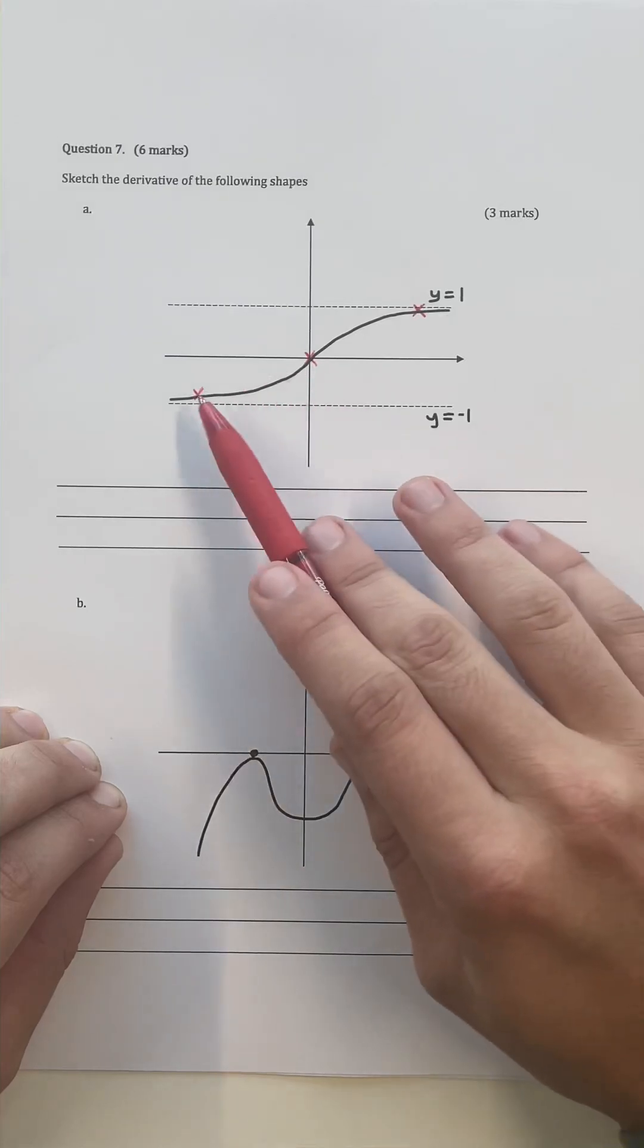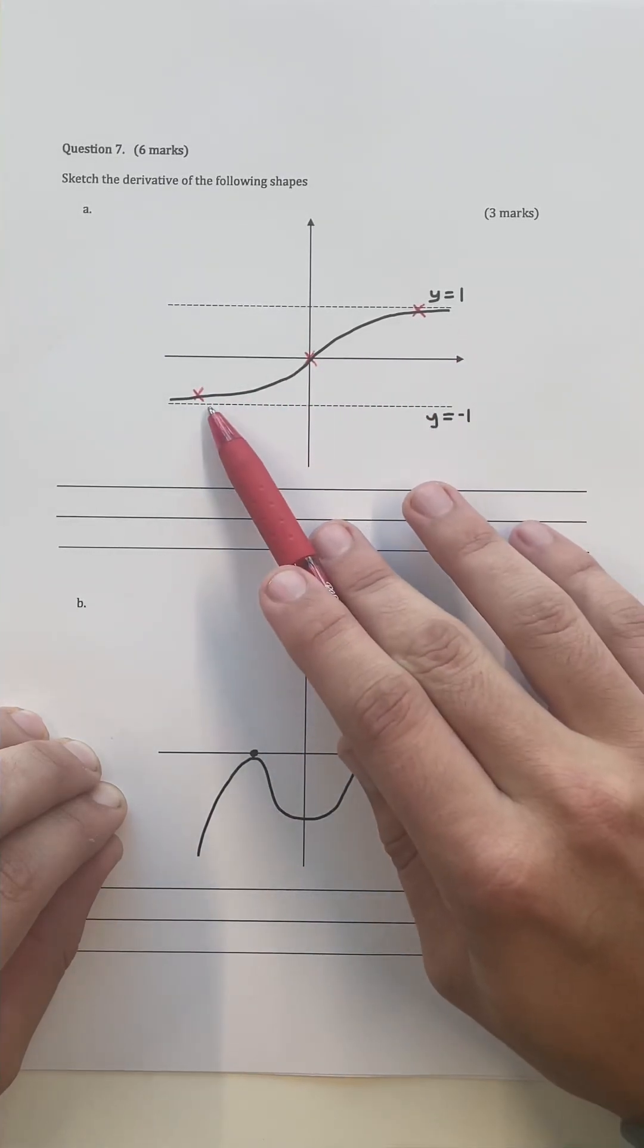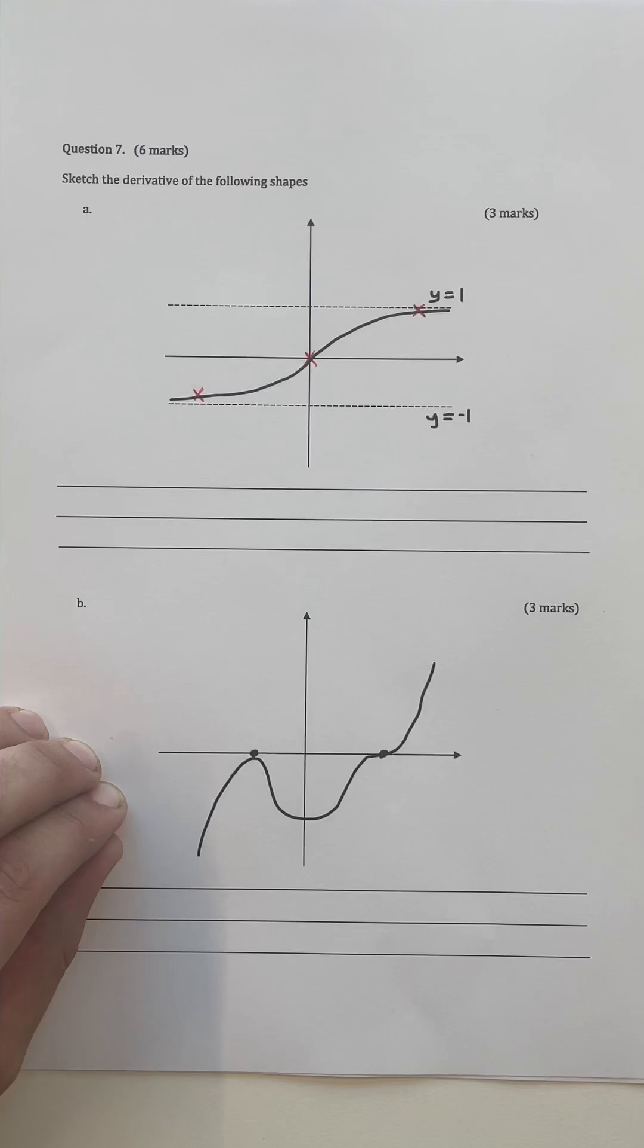So what we need to do is analyze the features of this graph. I've got three key features or three key moments in this graph here, and based on these features, we're going to be able to sketch the derivative of this function.